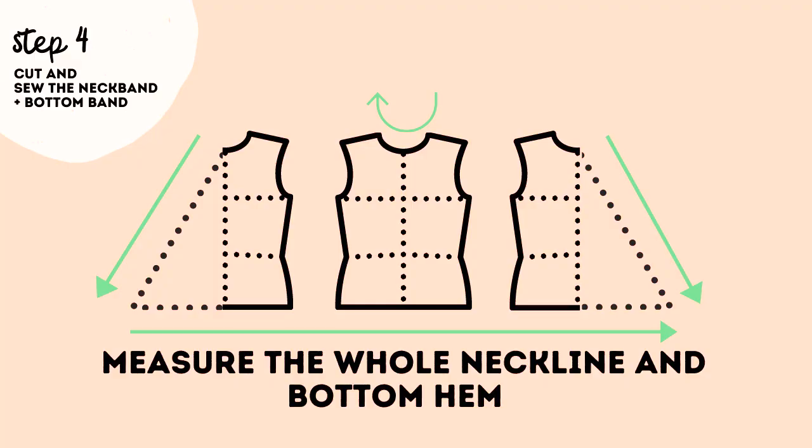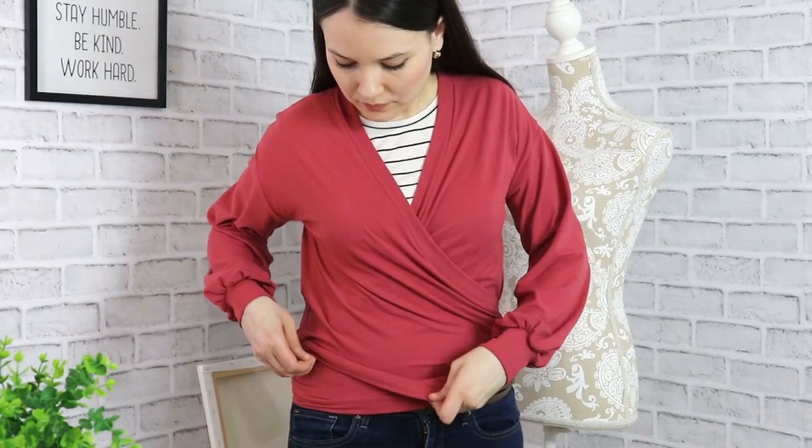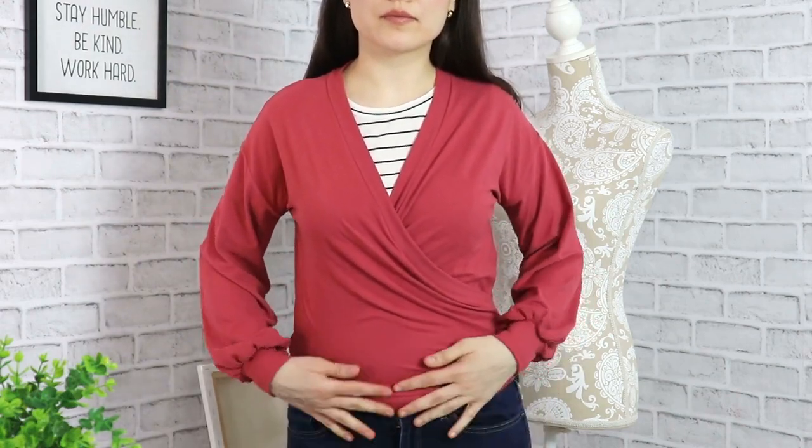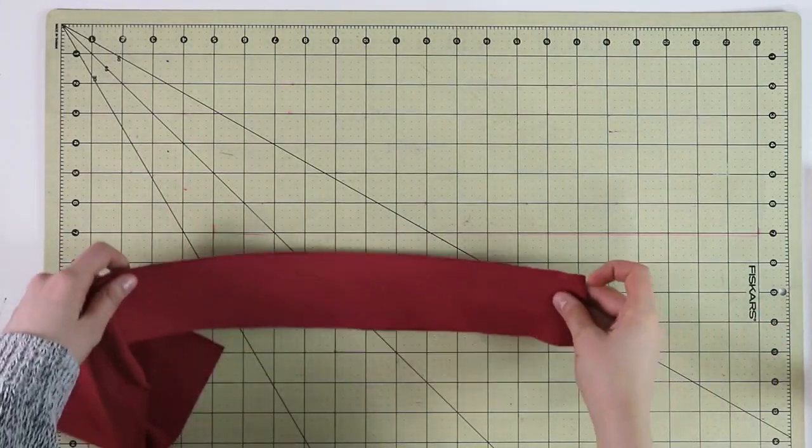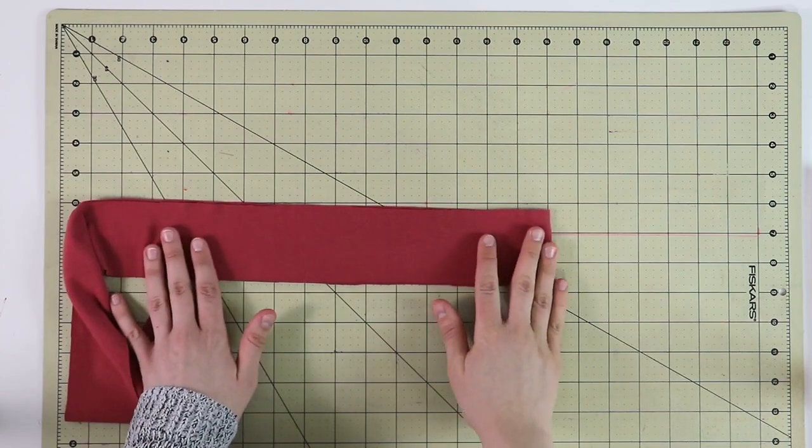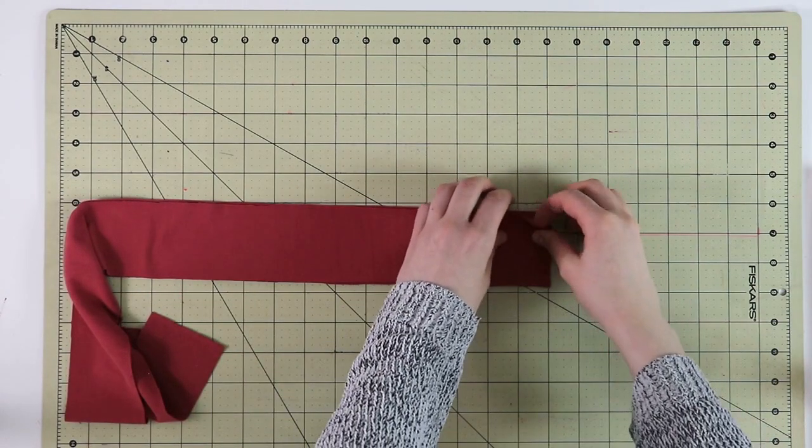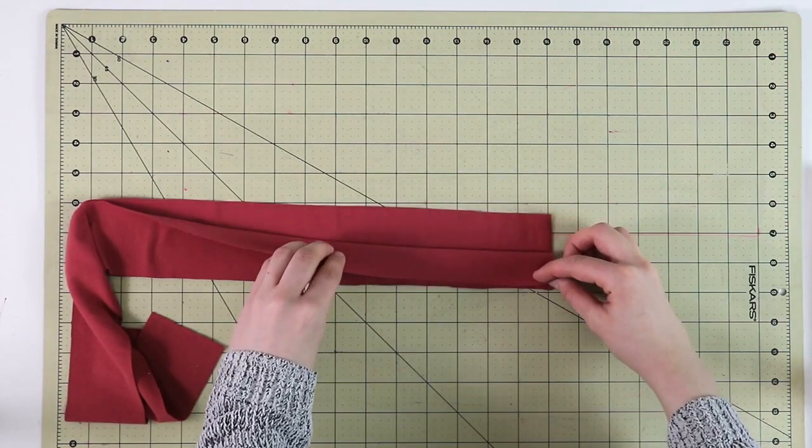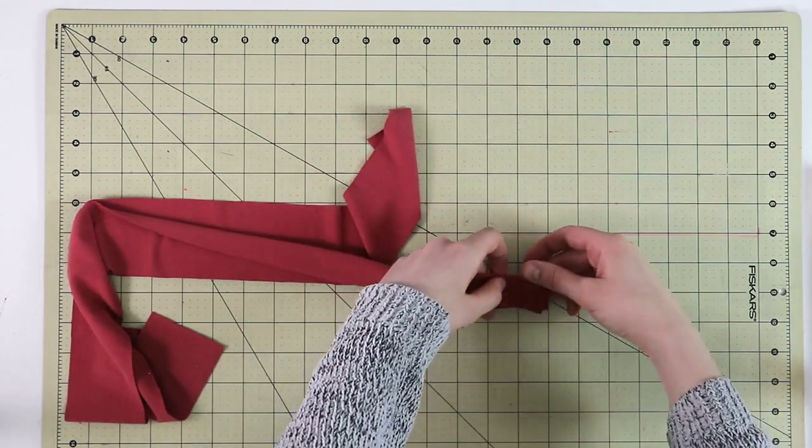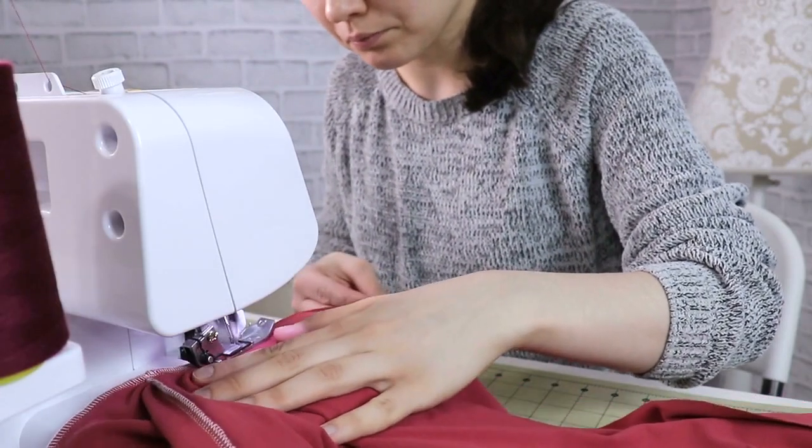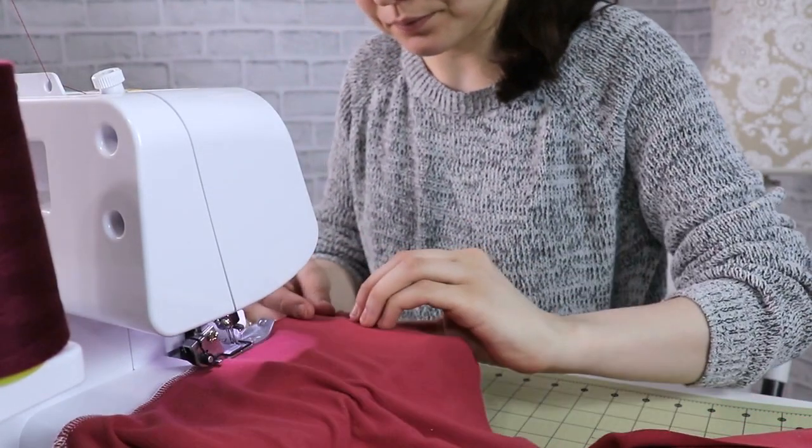For the next step, we will cut and sew the neck band and the bottom band. For that, you will need to measure two things. Number one, the whole neckline from one triangle all the way up to the back neckline all the way down to the other side of the triangle—that will be your neck band. And the bottom hem from one side all the way to the other side. Once you know the length you need, go ahead and cut your bands. I have cut my bands at two and a half inches wide, which together with the seam allowances once folded will give me about one inch once the neck band is actually attached.